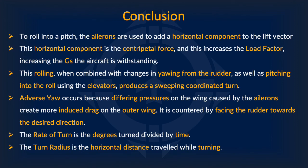Here is a quick conclusion of everything we learned today. To roll into a bank, the ailerons are used to add a horizontal component to the lift vector. This horizontal component is the centripetal force, and this increases the load factor, increasing the g's the aircraft is withstanding. This rolling, when combined with changes in yawing from the rudder and pitching into the roll using the elevators, produces a sweeping coordinated turn. Adverse yaw occurs because differing pressures on the wing caused by the ailerons create more induced drag on the outer wing — it is counteracted by facing the rudder towards the desired direction. The rate of turn is the degrees turned divided by time, while the turn radius is the horizontal distance traveled while turning.